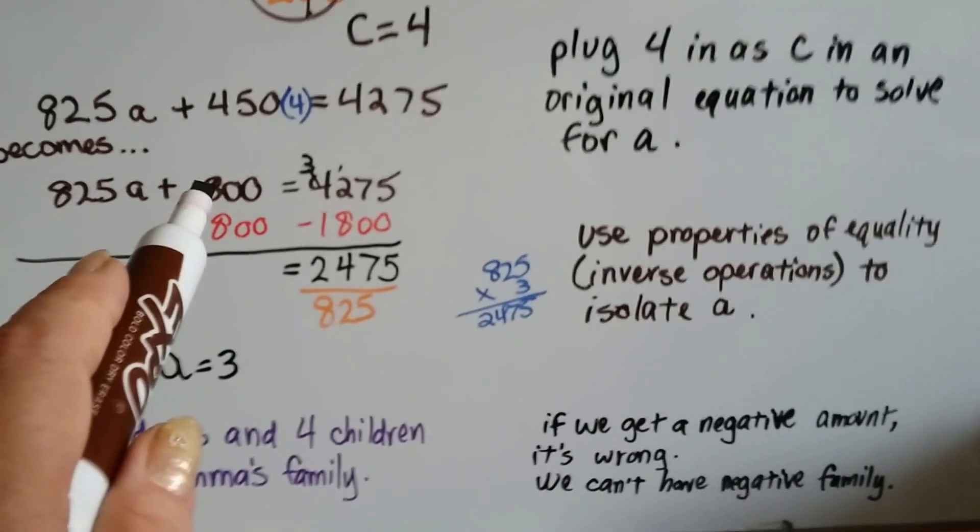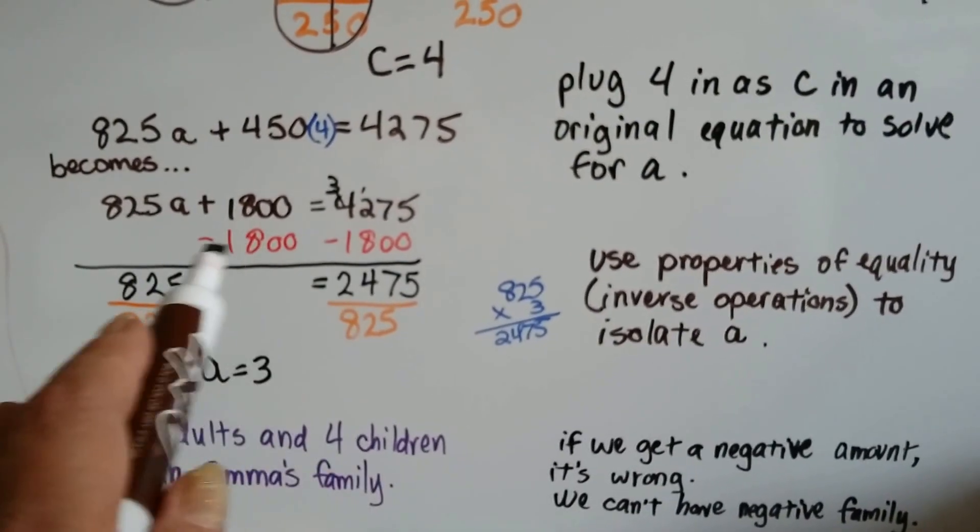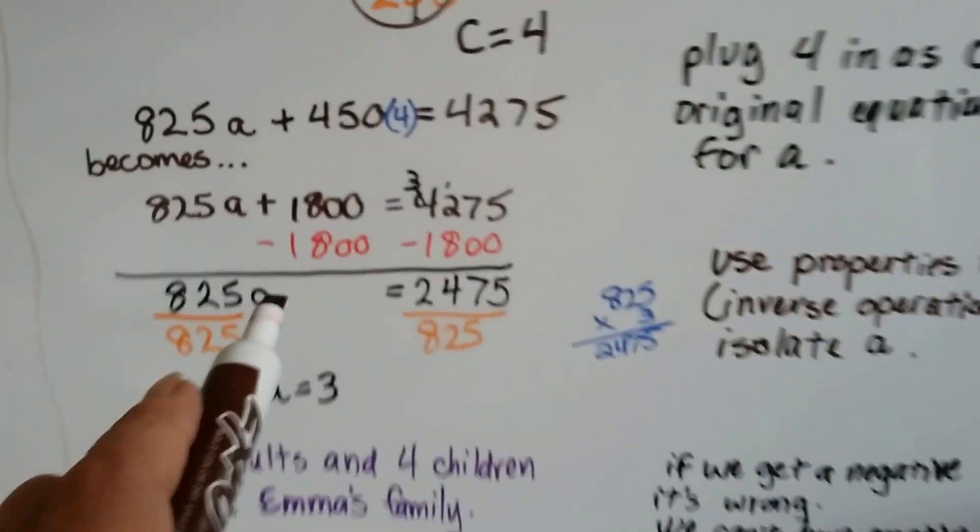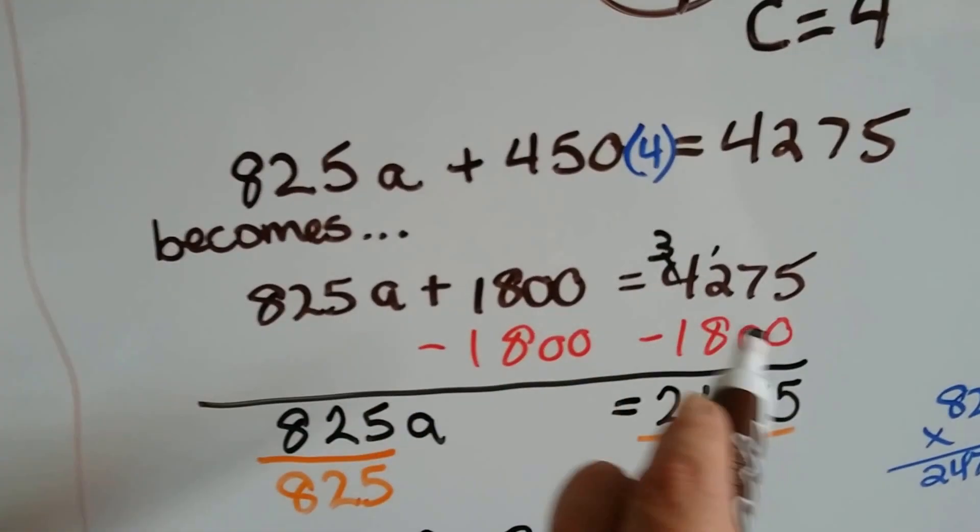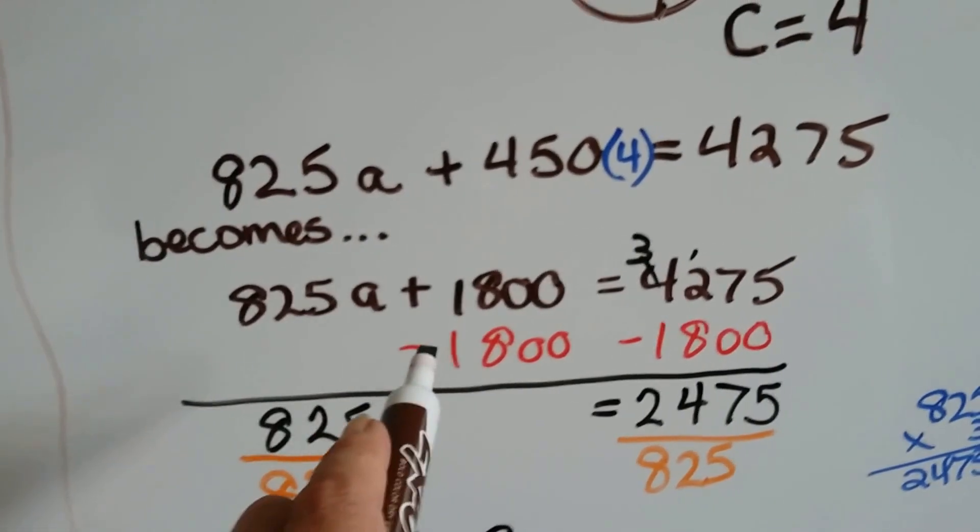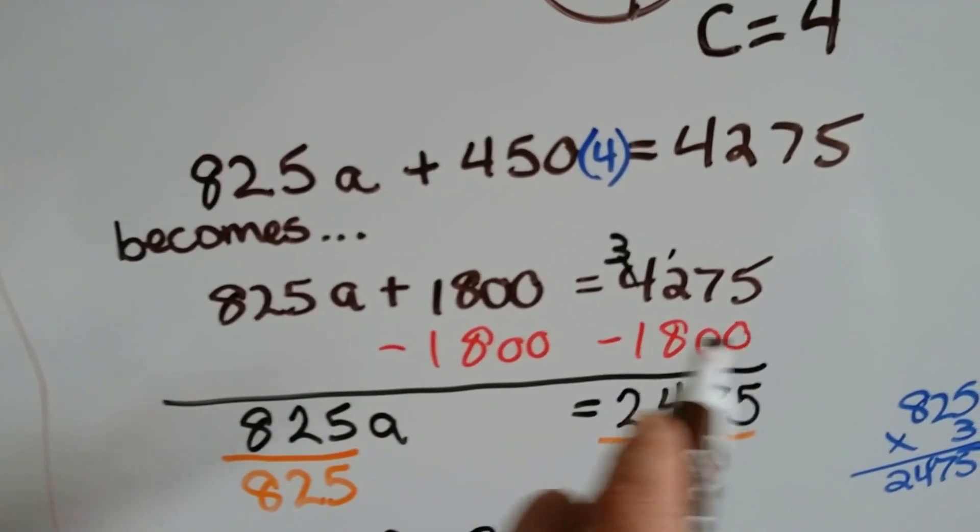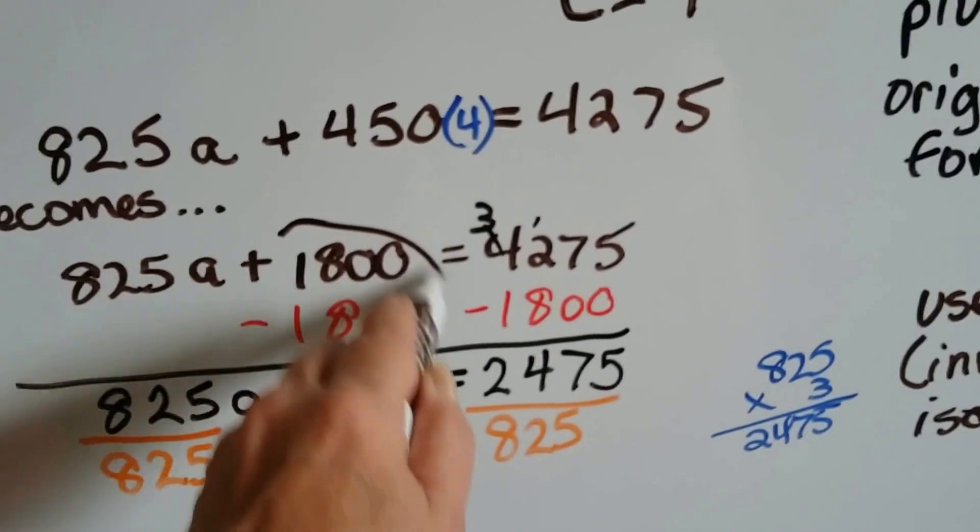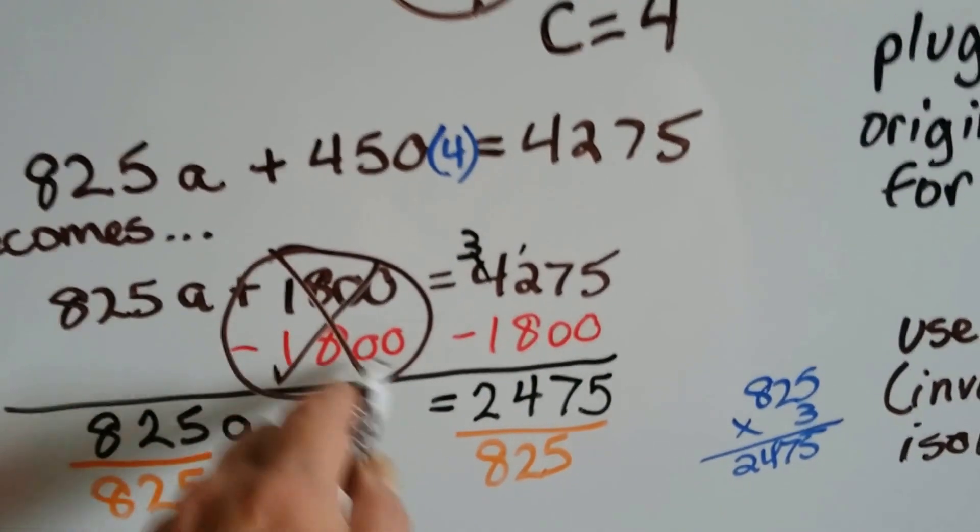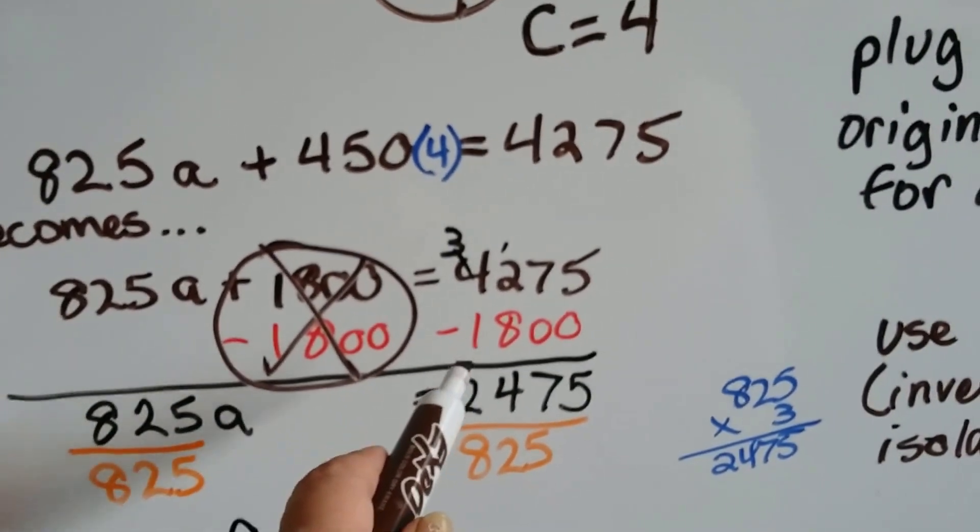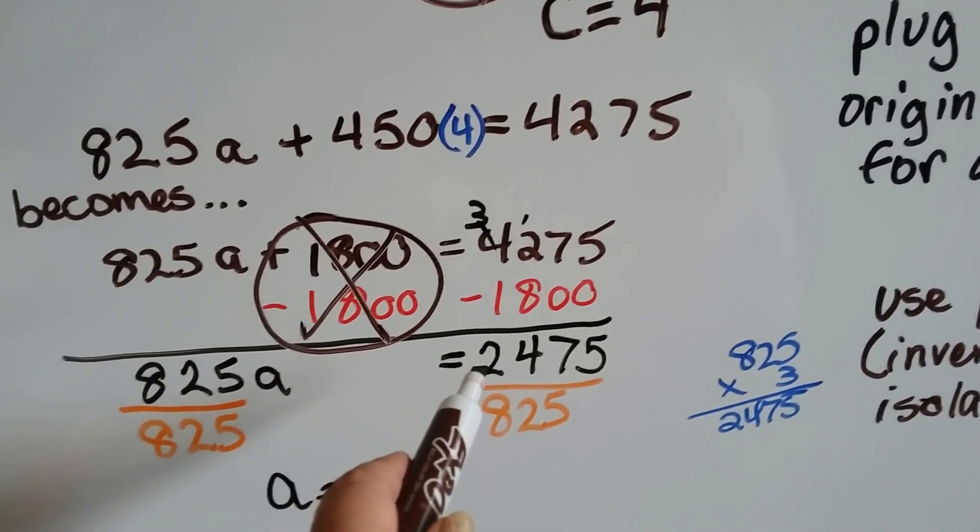Now we can use the properties of equality, those inverse operations, to isolate the A. We subtract 1800 from both sides because that's a positive 18. That's going to create a zero pair here. And when we subtract 1800 from 4,275, we get 2,475.